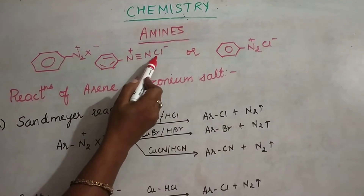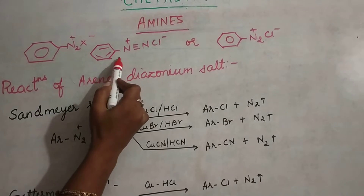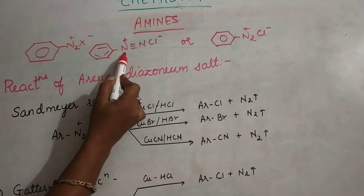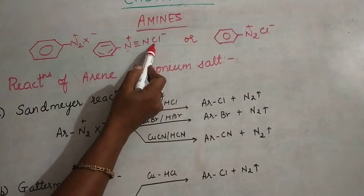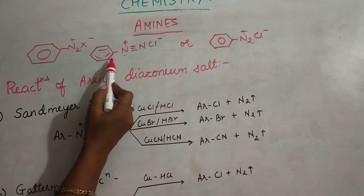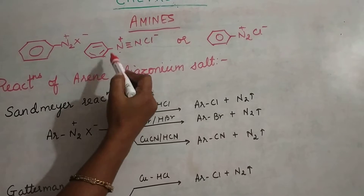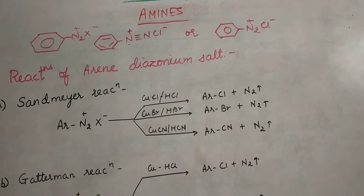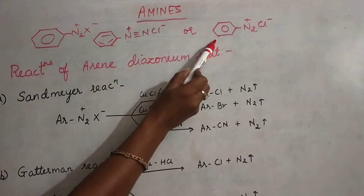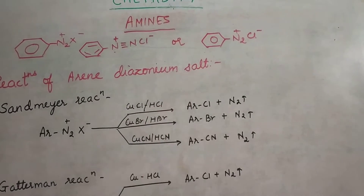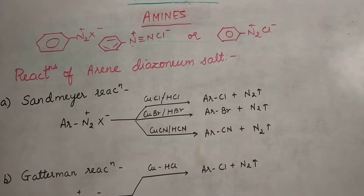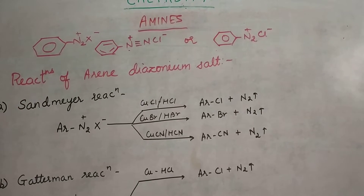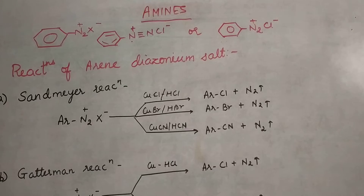When chloride ion is used, it is called diazonium chloride. The bonding is like this: the benzene ring is bonded to N, and that nitrogen is bonded to another nitrogen. This particular nitrogen carries a plus charge and is associated with a negative ion Cl−, making it a salt. We can write the structure compactly as benzene ring with N2+Cl−. This is particularly called arene diazonium salt, because an aromatic compound has N2+Cl− attached. So we have to see the reactions of arene diazonium salt.